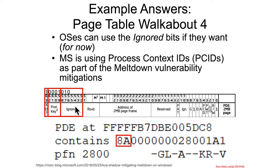The ignored bits we don't care about, because the operating system can safely use those bits for whatever it wants. Even if someone was using 57-bit linear addresses, the maximum right now for physical addresses is still 52, so Intel would have to expand the physical address space before using those bits would be unsafe for an operating system.